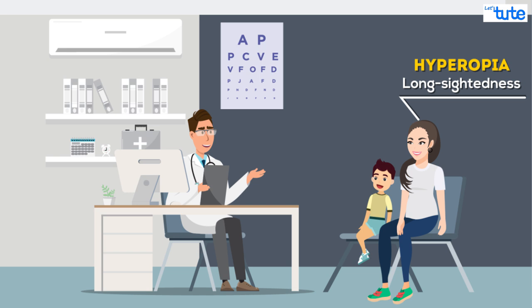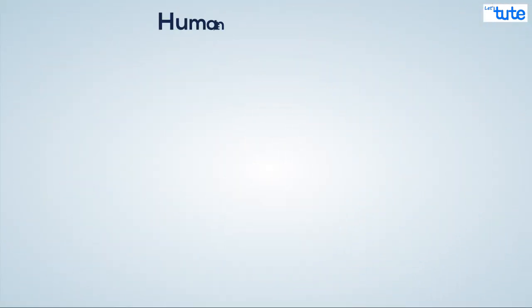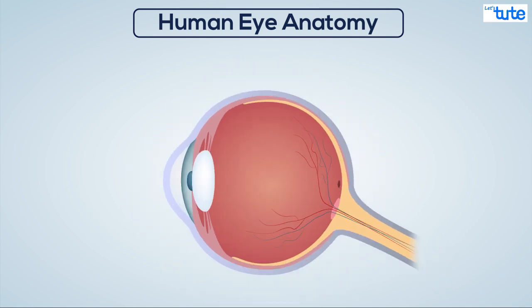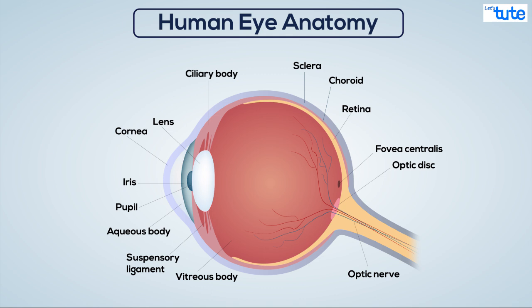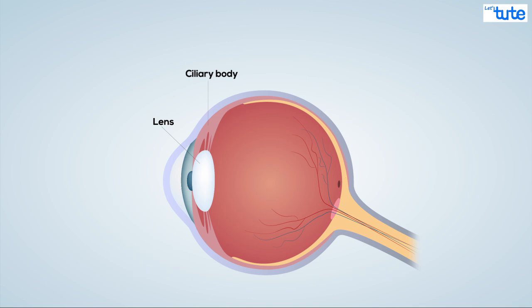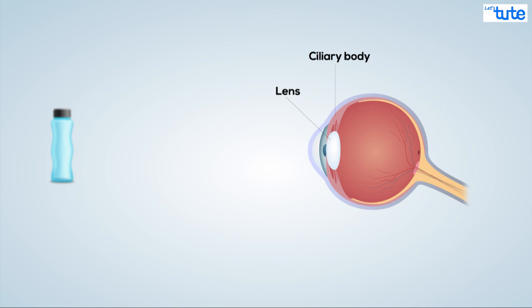In order to understand this better, let's see what exactly is happening in Adam and his mother's eyes. Before that, we should see how a normal human eye looks and works. In a human eye there are a lot of different parts as you can see, but we are more focused on the lens and the ciliary muscles which help us to see near and far objects.